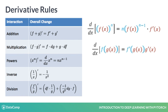A closely related term to derivatives is the gradient. The gradient is a multivariable generalization of the derivative, and considering that neural networks have many variables, we will typically use the term gradient instead of derivative when working with neural networks.